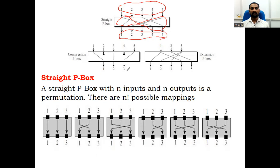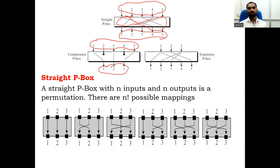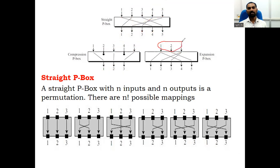If you consider a compression P-box, it takes five bits as input and produces three bits as output — the number of bits is compressed. Which bits are not converted depends upon the pre-program. Similarly for expansion — it takes N bits input and produces M bits. For example, taking three bits and producing five bits — that's how we call it an expansion P-box.